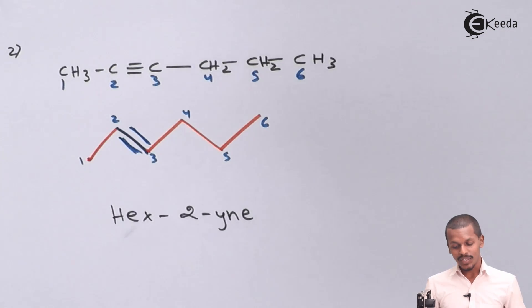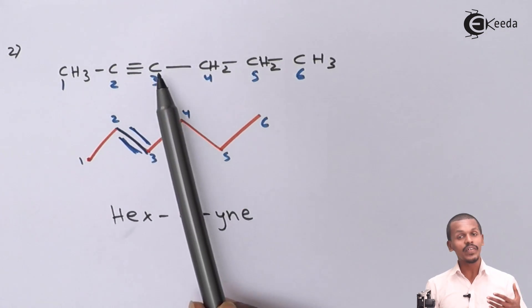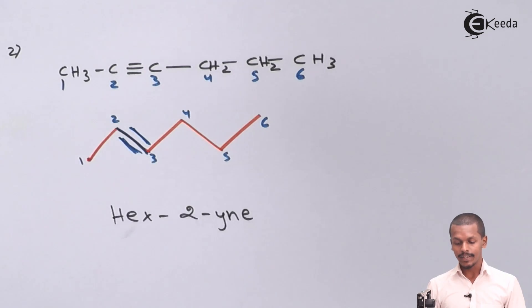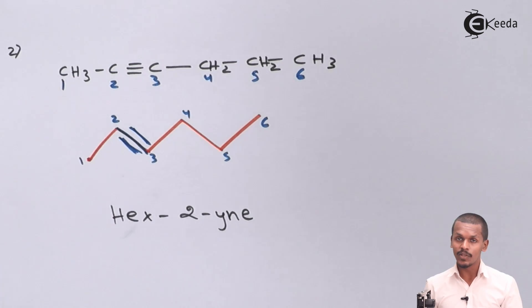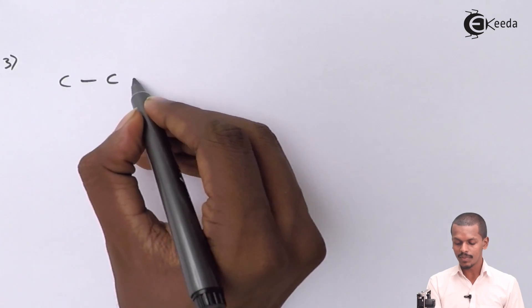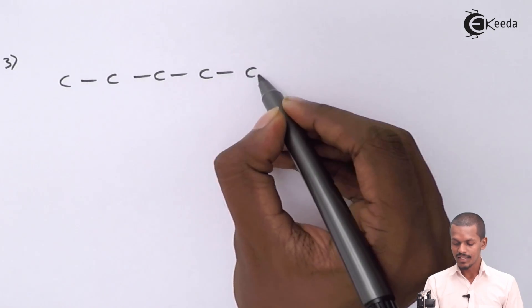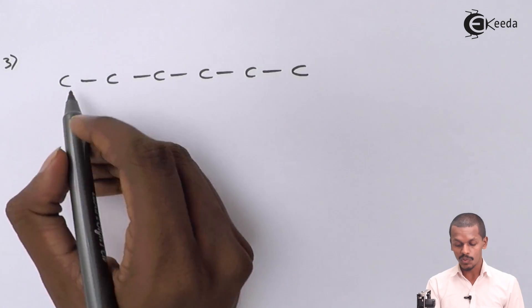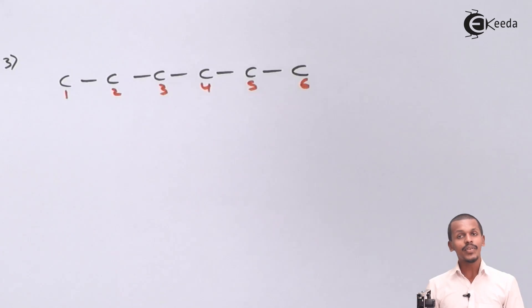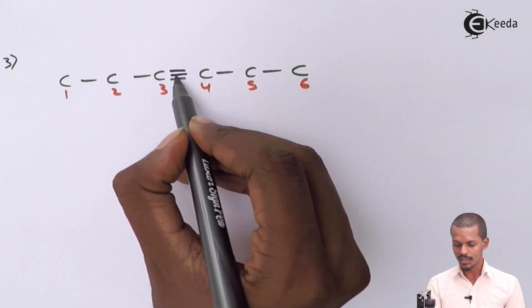The next isomer will have the carbon-carbon triple bond between carbon number 3 and carbon number 4, while between carbons 2 and 3 there will be only a single bond. Let us draw this third isomer, which consists of 6 carbon atoms in a straight chain, numbered 1 through 6.